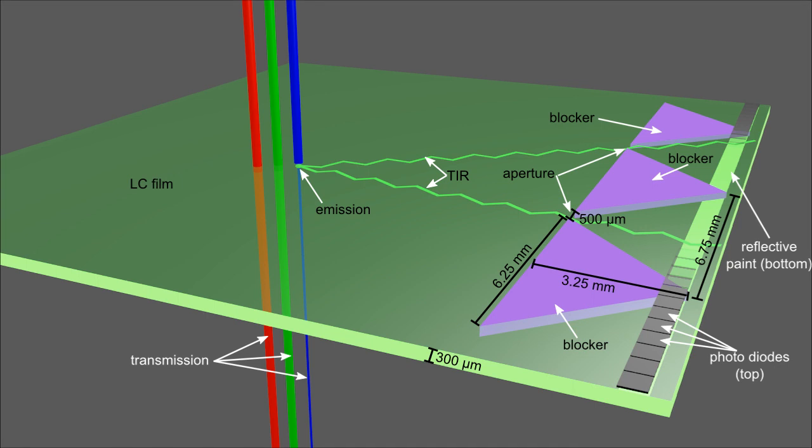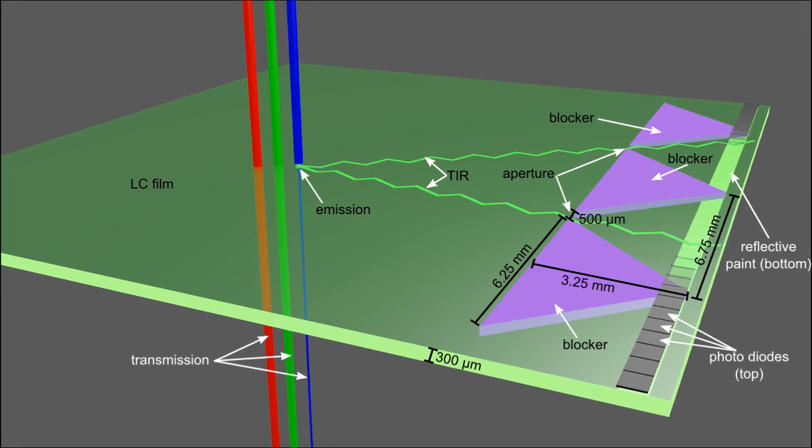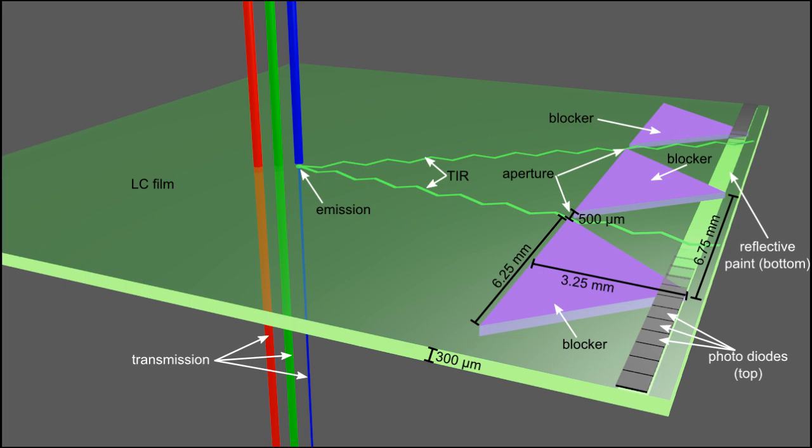The LC forwards the emitted light towards its edges by total internal reflection at an attenuation that is proportional to the travel distance. Photodiodes glued to its surface decouple and measure the light at various positions.